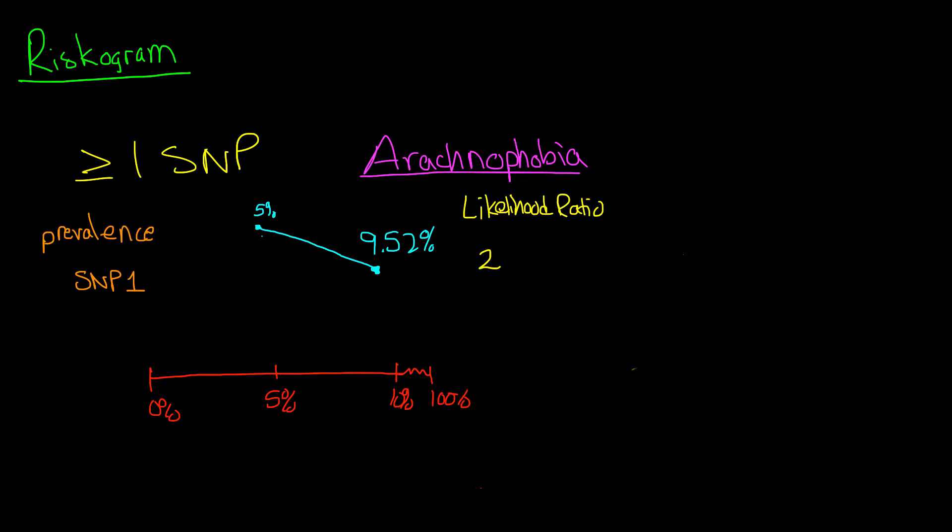Now originally we looked at the sickle cell anemia case, which involves only one SNP. But that's a very rare case, and most diseases are much more complex.